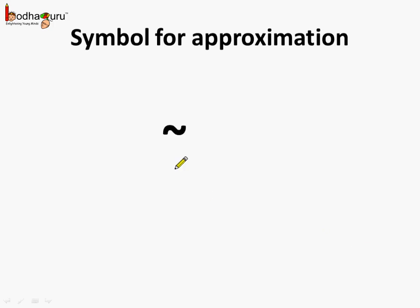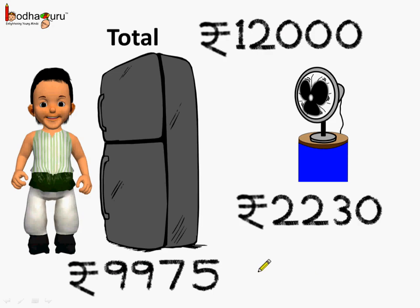We round off the number and it helps to get approximate answers while adding, subtracting, dividing, or multiplying. Estimation helps us in day-to-day operations for calculating while doing different problems. As we saw, Bola gave the approximate answer for the total price and said approximately 12,000 rupees was the total price. There is a symbol used for approximation. When Bola said the total price was approximately rupees 12,000, it could be written as: total price ≈ rupees 12,000.